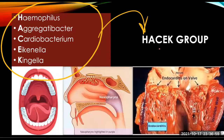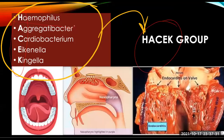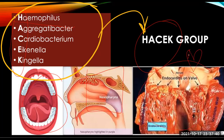For the HACEK group, specific species of the genera Haemophilus, Aggregatibacter, Cardiobacterium, Eikenella, and Kingella have been grouped together under the acronym HACEK — the first letter of each genus: H for Haemophilus, A for Aggregatibacter, C for Cardiobacterium, E for Eikenella, and K for Kingella. These organisms reside in the human oral cavity and nasopharynx, and some species have an enhanced capacity to cause endocarditis in the heart.